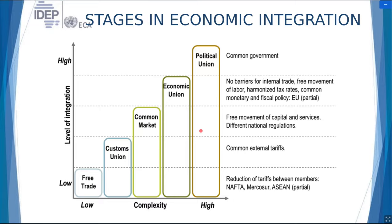Finally, the political union is the ultimate stage in the process of regional integration, involving a common government. In the real world, regional integration arrangements span the entire spectrum. The European Union is perhaps a combination of an economic union and a political union, though some may not describe it as a political union as such. A political union perhaps is the United States of America — the federal government, central government, common currency — that may be regarded as a political union. The European Union is more of an economic union, moving perhaps towards a political union.